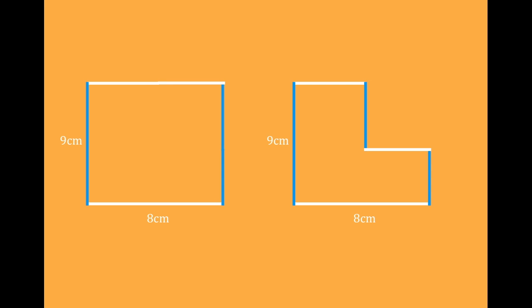We just add 9 and 8 and then double it. So that's how we can find the perimeter of this shape over to the right. We add 9 and 8, double it and we get 34.